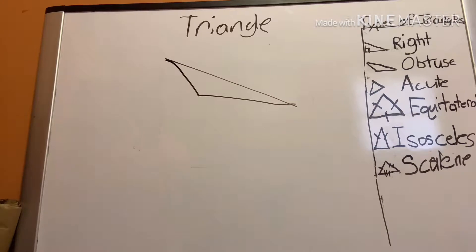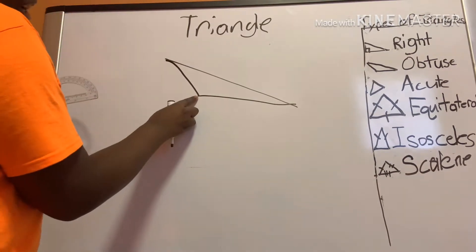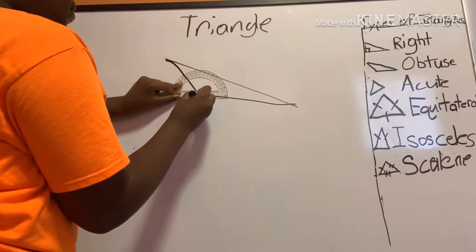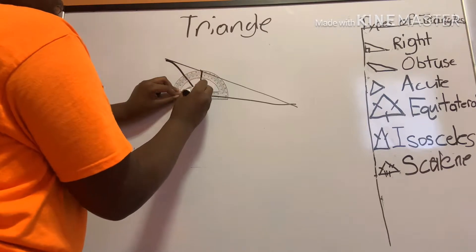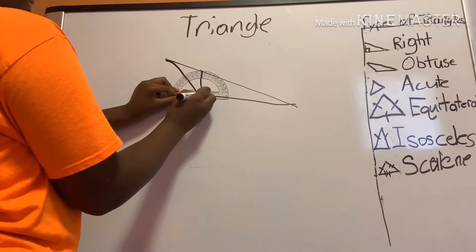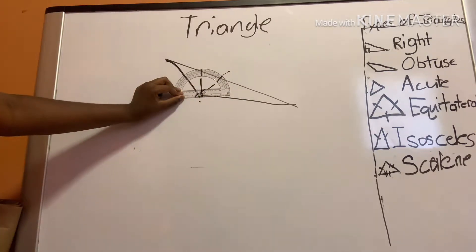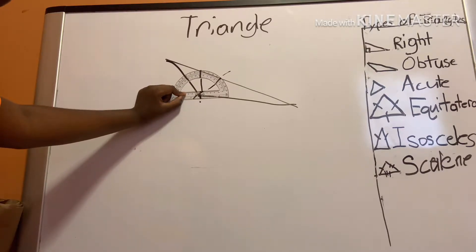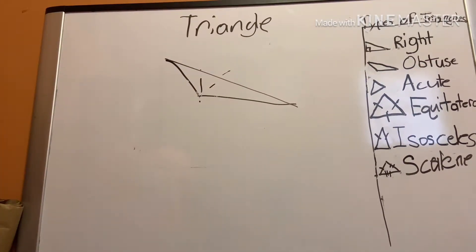Now this would be an obtuse angle because it's bigger than 90 degrees. The way you use the protractor on this — there's usually a small circle on the edge of the protractor, so you put it right there and line it up. You line that edge up with the line, and then you look at where the other line falls. Right now my protractor shows a 120 degree angle.